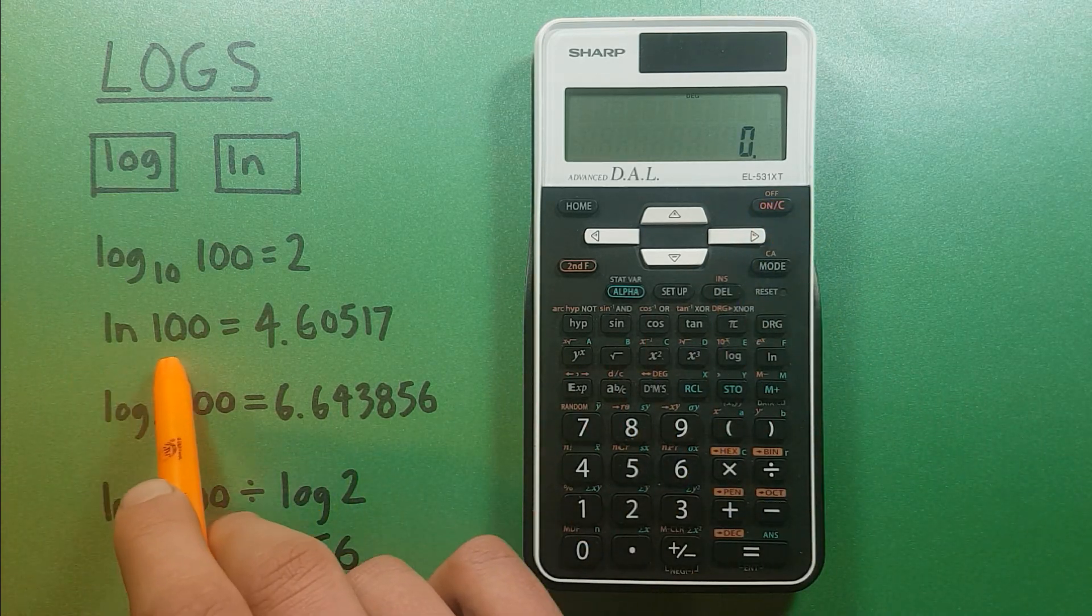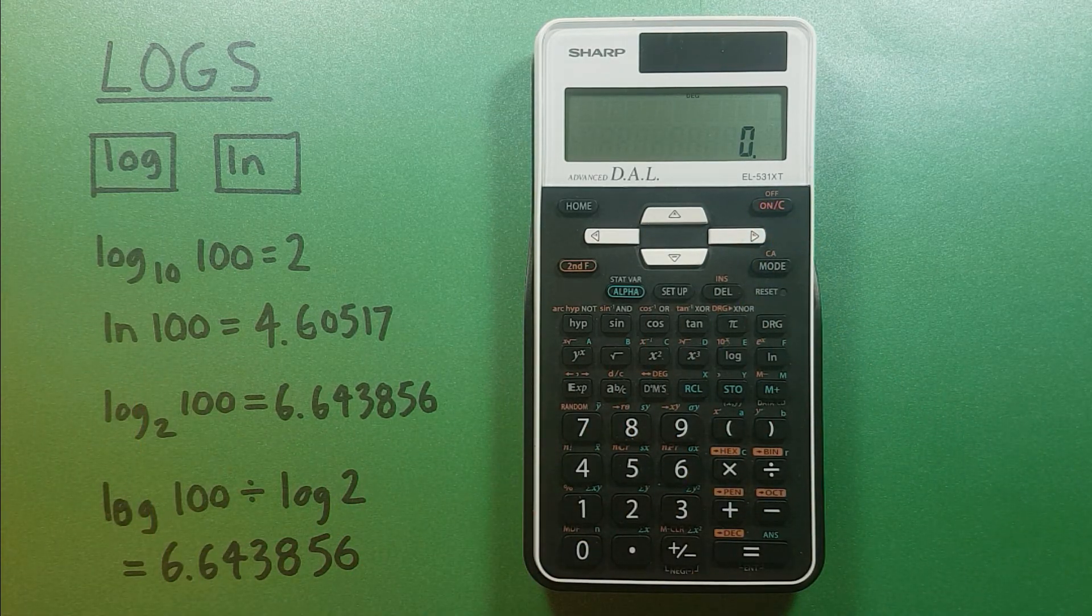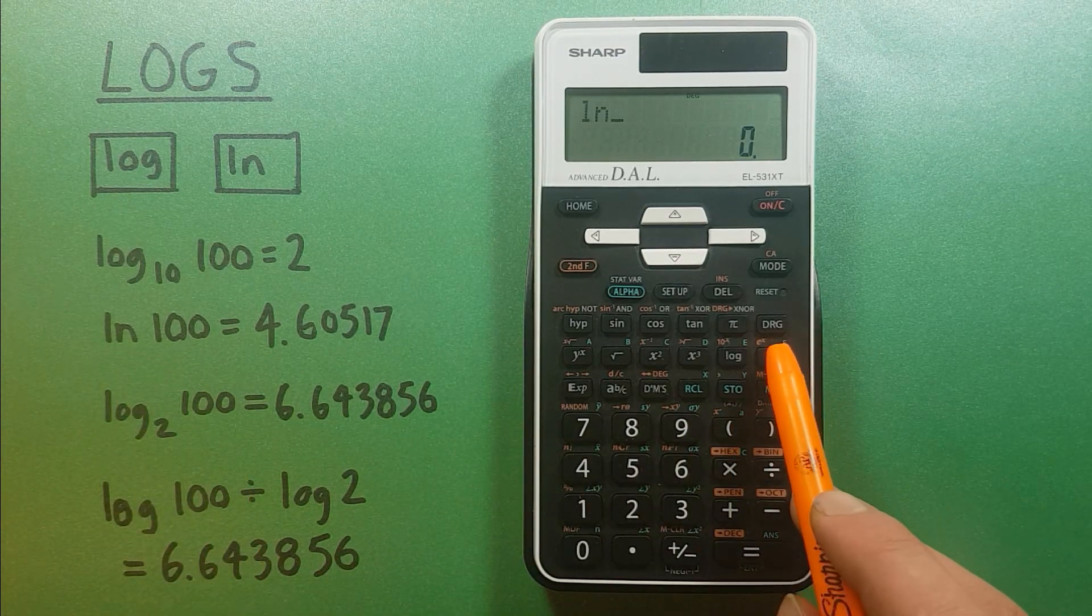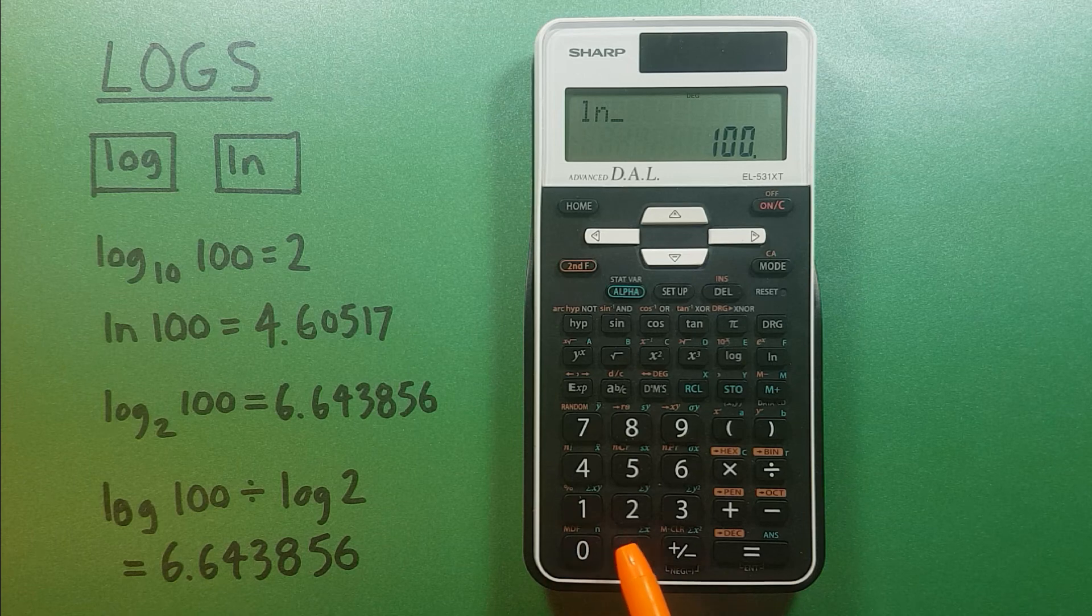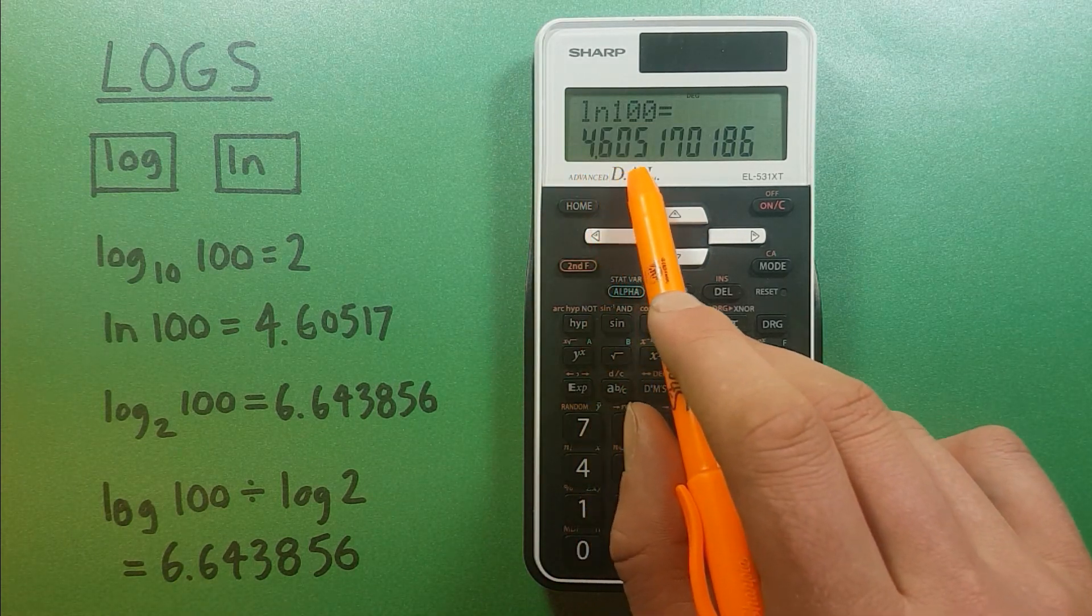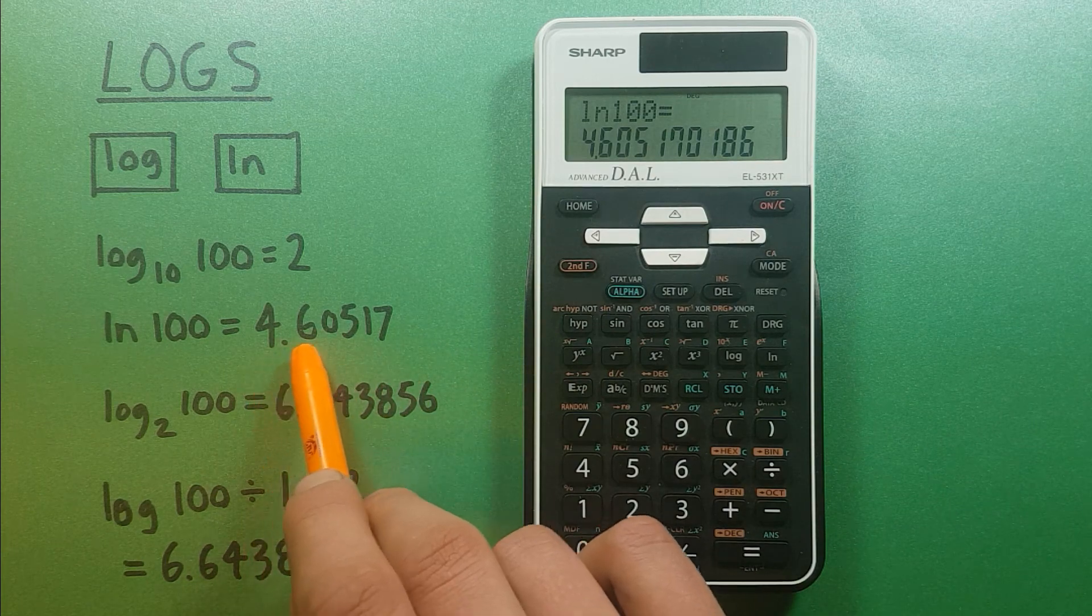We can also do the same with the natural log or ln. If we wanted to find the natural log of 100, we press ln, 100, equals, and we get 4.60517, which is the correct answer.